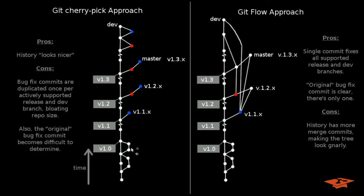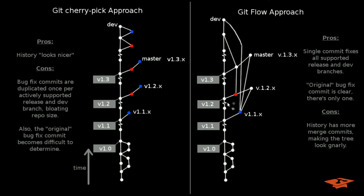Another thing that is not obvious but is a result of the cherry pick approach is that the original bug fix commit becomes difficult to determine. If you're looking at the tree later, there's really no way to know which one of these blue or red commits happened first unless you start digging through the dates. It's ambiguous — was the fix first applied here and then cherry picked here and here, or was it applied somewhere else? That kind of information can get lost. With the git flow approach, there are significant pros: there is a single commit for each fix that supports all release and dev branches, so the original bug fix commit is clear because there's only one of each.